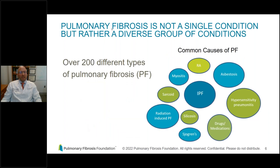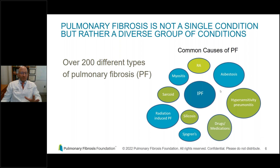Pulmonary fibrosis is not a single condition — the term represents any of the conditions that cause scarring of the lung, and in fact, there are probably 200 different types. Some common causes include RA (rheumatoid arthritis), IPF (idiopathic pulmonary fibrosis), hypersensitivity pneumonitis, sarcoidosis, and many other conditions. I also want to point out that the circles I've drawn don't represent prevalence or incidence — that's just my poor PowerPoint skills. The point is that there are a lot of causes of pulmonary fibrosis.